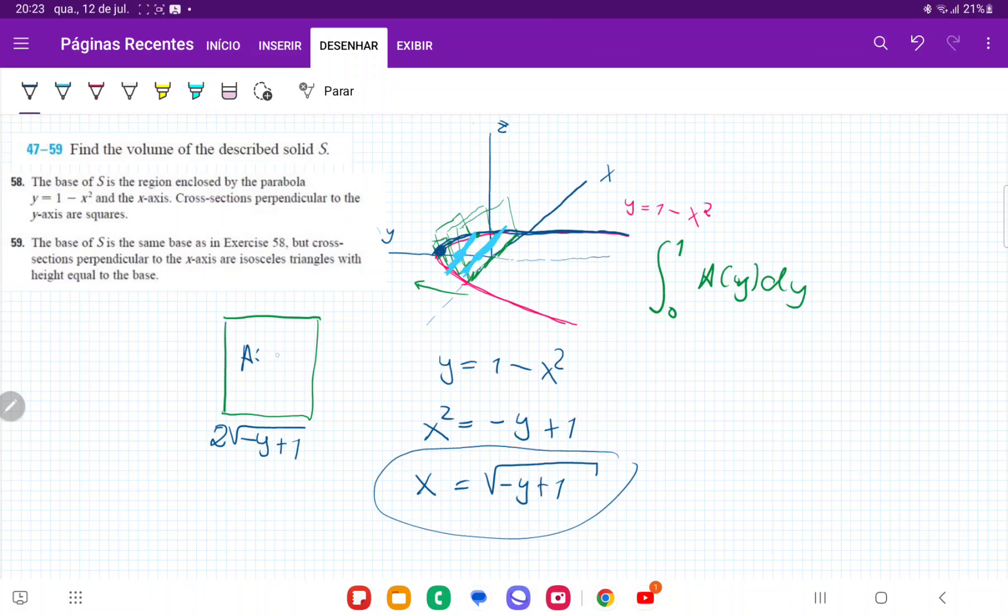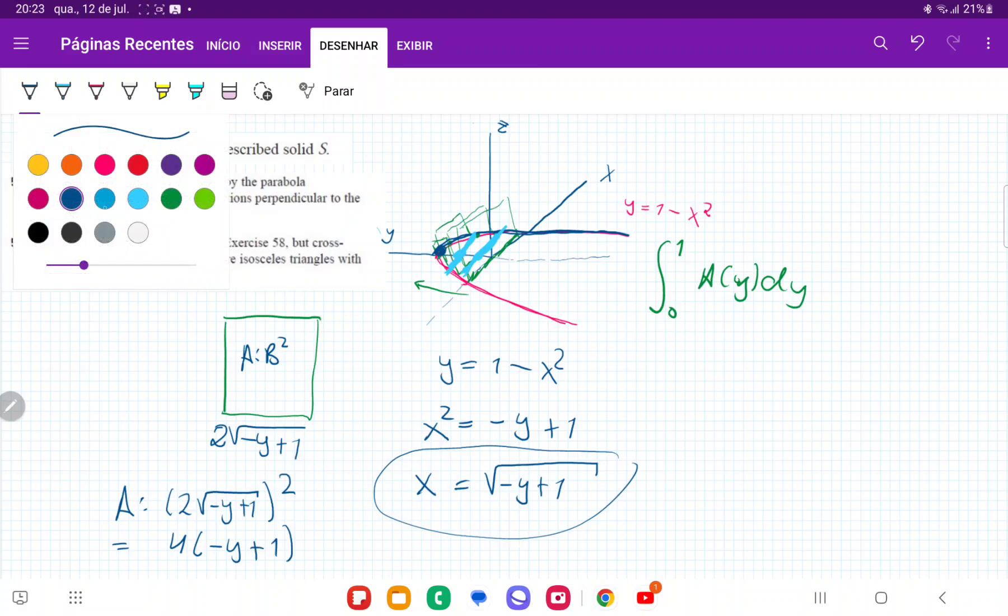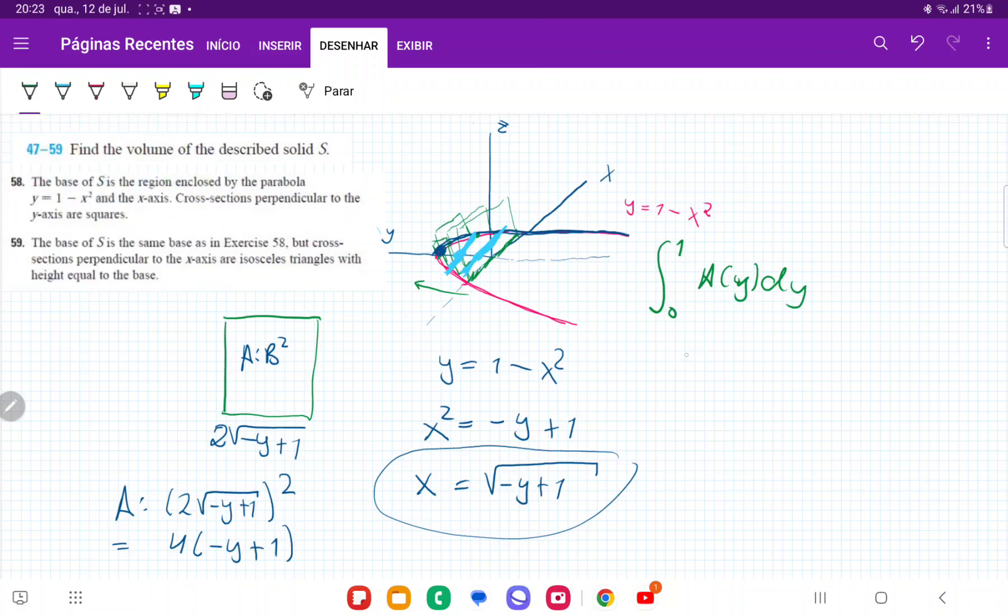So if the area here is the base squared, therefore the area is going to be 2 root of minus y plus 1 squared, which is going to be equal to 4 times minus y plus 1. So that's our area. So we are ready to integrate this.